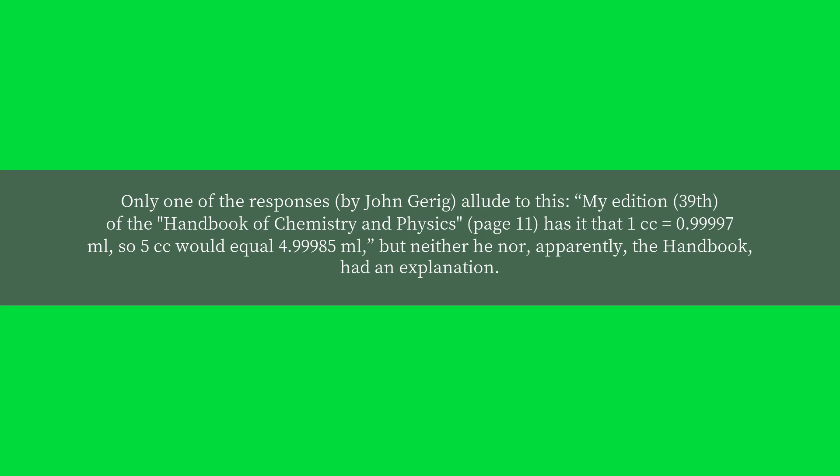My edition, 39th, of the Handbook of Chemistry and Physics, page 11, has it that 1 cubic centimeter equals 0.99997 milliliters, so 5 cubic centimeters would equal 4.999985 ml, but neither he nor, apparently, the handbook, had an explanation.